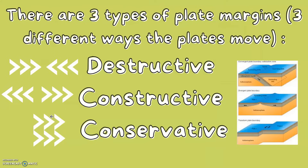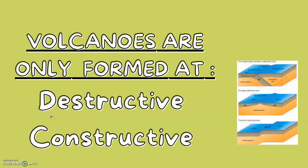There are three types of plate margins — three different ways the plates move. Destructive is when the plates collide towards each other. Constructive is when they pull apart. And conservative is when they are going side by side in different directions or at different speeds. Volcanoes are only formed at two of them: destructive and constructive.